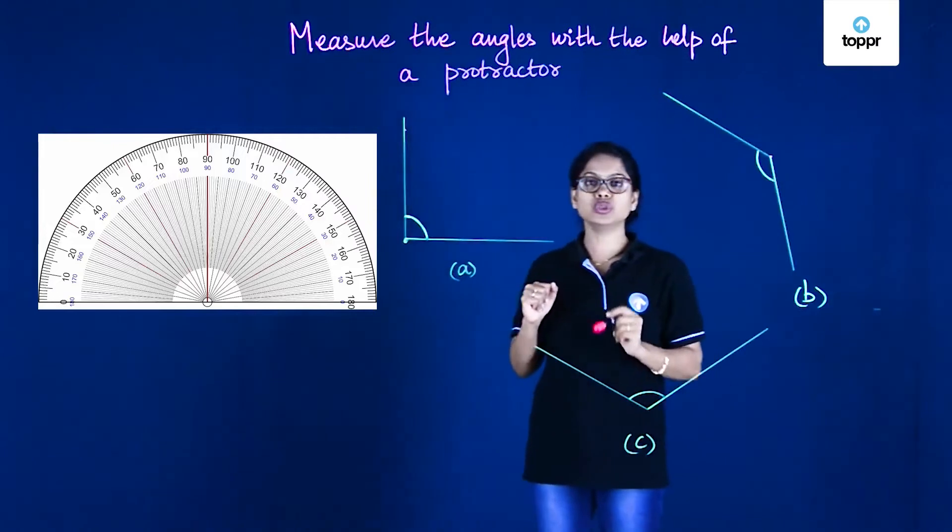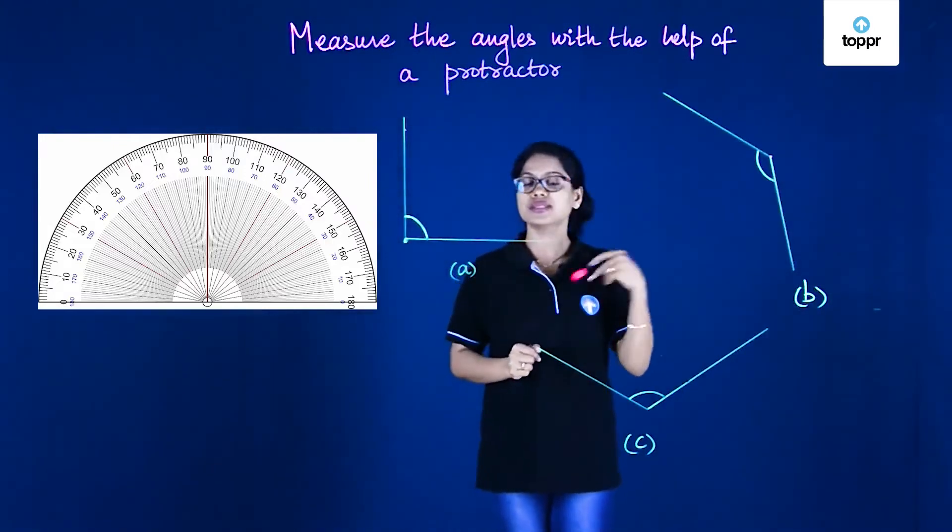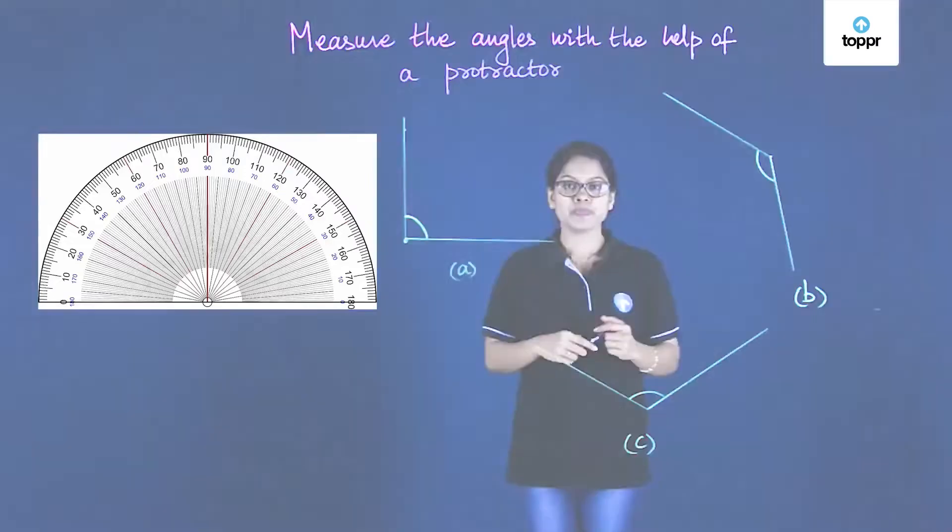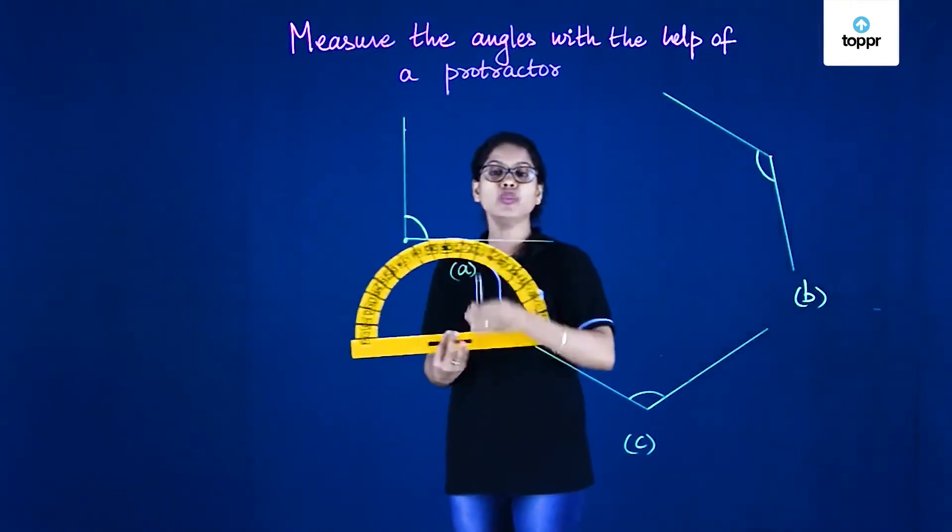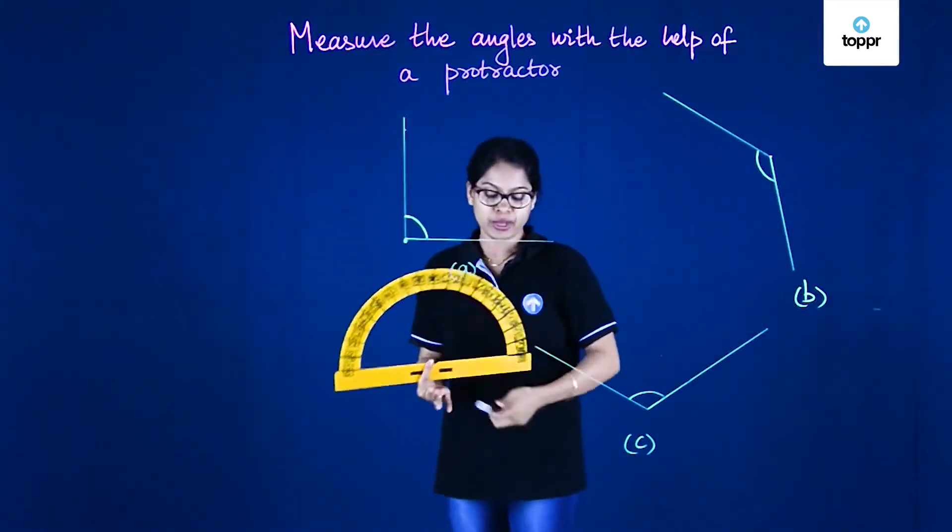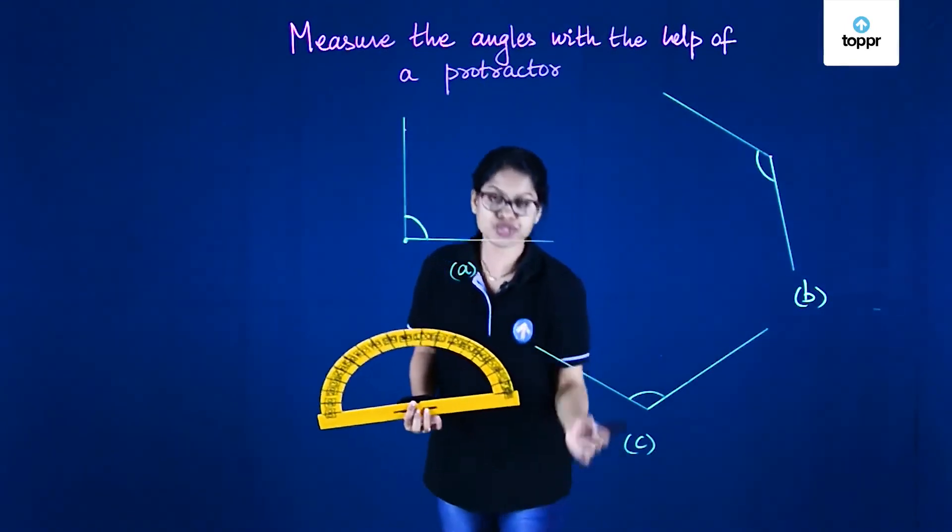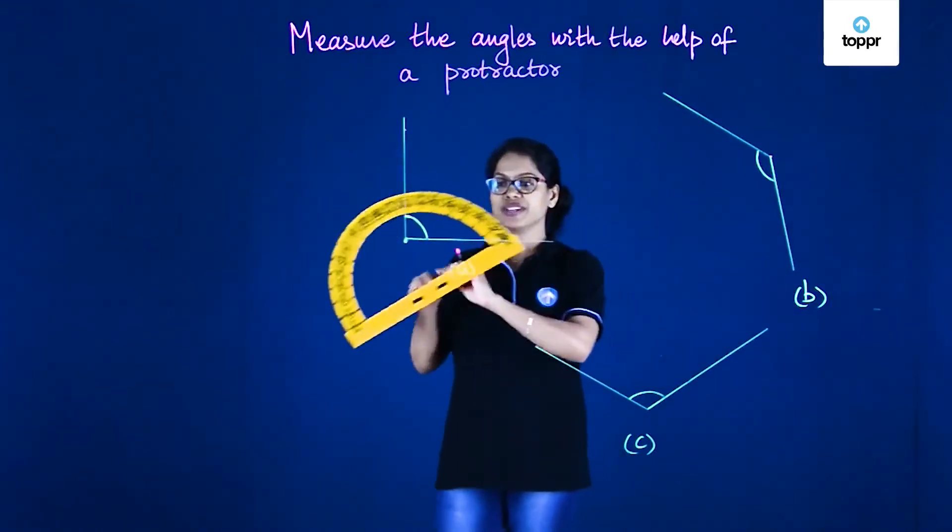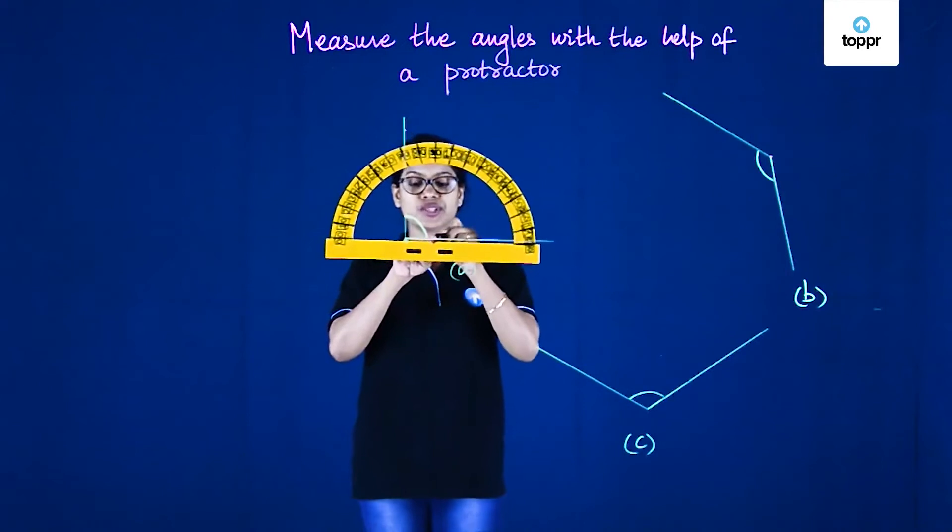We're going to use a protractor to measure the three angles that we have over here. Here's a protractor, and now we'll learn how to measure this angle A. In order to measure this, the first thing we need to do is fix the vertex with the middle point.